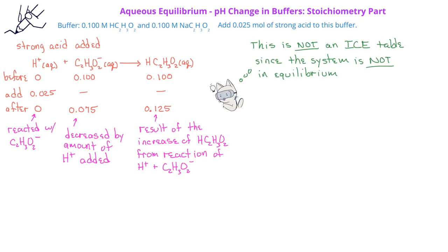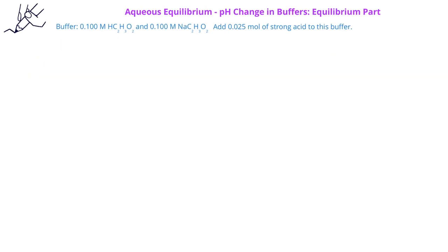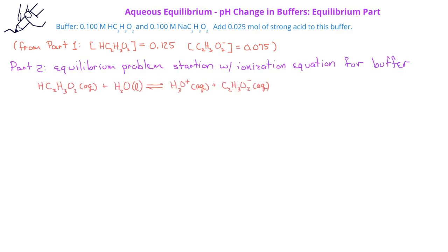It's important to note that this kind of table is not an ICE table because we are not working with an equilibrium system — we have the one-directional arrow showing a one-way reaction. Now that we know the amounts of the acetate ion and the acetic acid present after addition of the strong acid, we can do the equilibrium problem. We set up the usual ICE table showing the ionization equation of the acetic acid with water to produce the hydronium ion and the acetate ion. The difference is that for this ICE table, we'll use the amounts of the acetic acid and the acetate ion that we determined from the stoichiometry problem in the previous step.